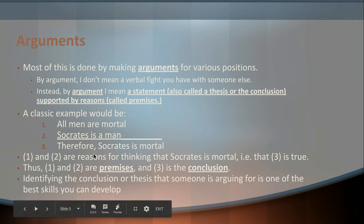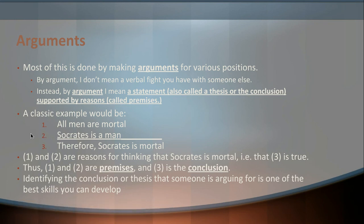This is a standard simple example of an argument. I have numbered the various statements so we can refer to them easily. Statements one and two are reasons for thinking that Socrates is mortal — that is, one and two are reasons why three is true, and this is what makes it an argument. These reasons, as part of an argument, we can refer to as the premises. Statement one — all men are mortal — is a premise: a reason or bit of evidence given in support of that conclusion. The conclusion is the thing that an argument is trying to convince you of — what someone is trying to demonstrate by giving reasons for that position.